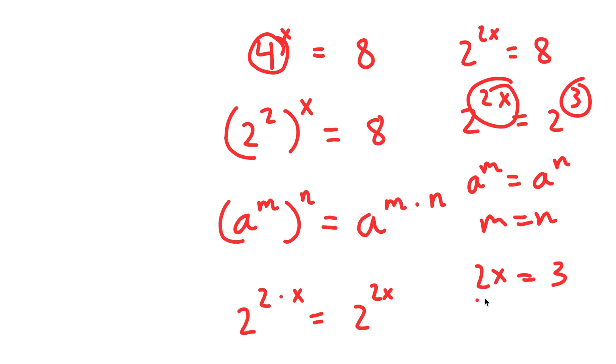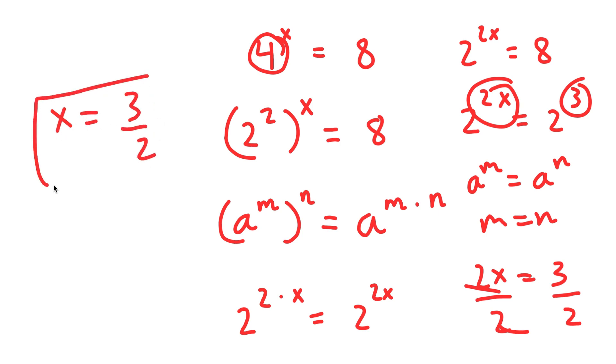To solve this, all I have to do is simply divide both sides by 2. These two cancel out, and I'll be left with x is equal to 3 over 2. So this is one method of solving this problem.